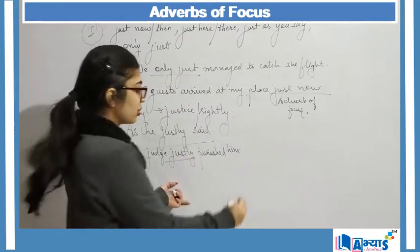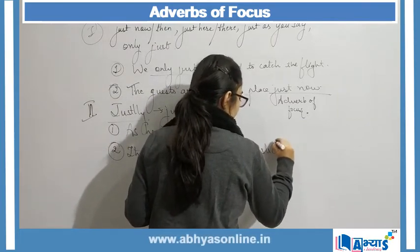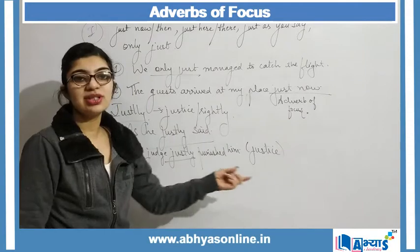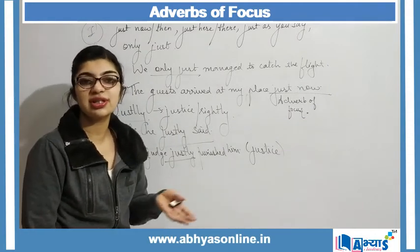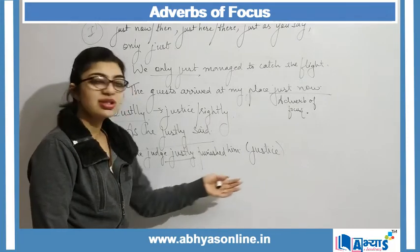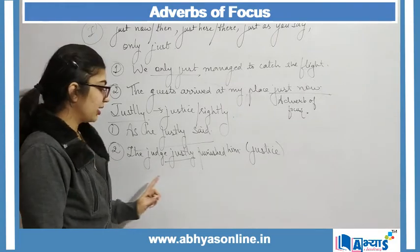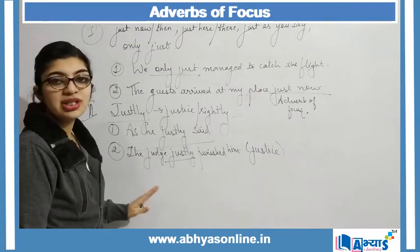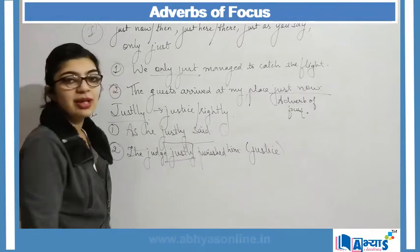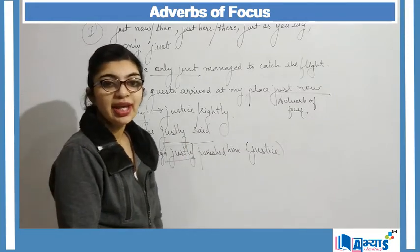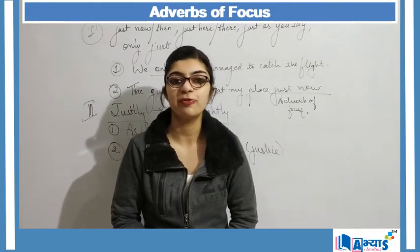In 'the judge justly punished him', justly is used in the sense of justice. I can also say justice was given to the innocent person — how was the justice given? The criminal was punished and the victim was given justice. So in that case I am using the adverb 'justly', and here justly becomes my adverb of focus.